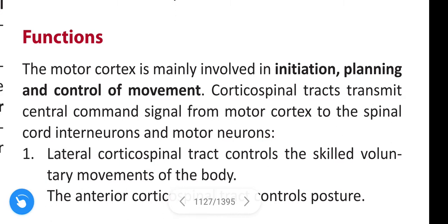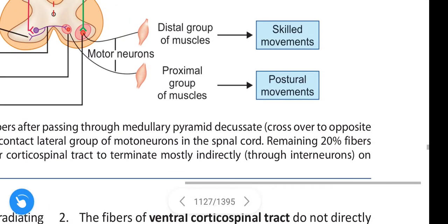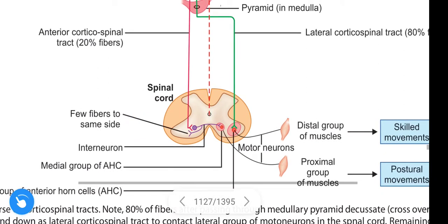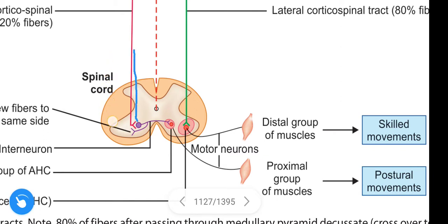The medial motor neurons supply the proximal limb muscles and axial muscles of the body. Coming to the functions: the motor cortex is mainly involved in initiation, planning, and control of movement. The corticospinal tract transmits central command signals from the motor cortex to spinal cord interneurons and motor neurons. The lateral corticospinal tract controls skilled voluntary movements, while the anterior corticospinal tract controls postural movements.